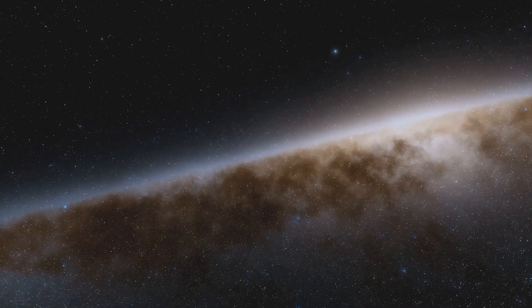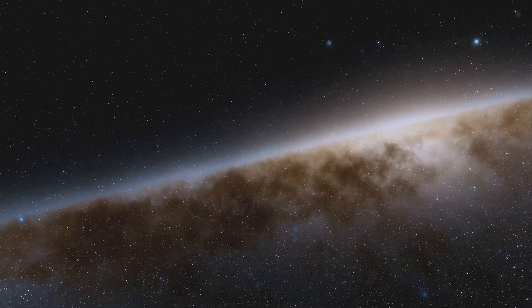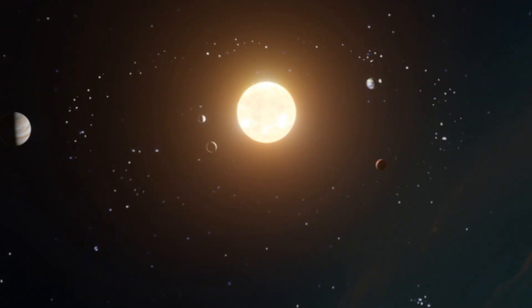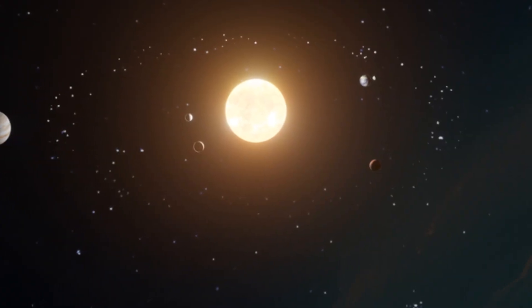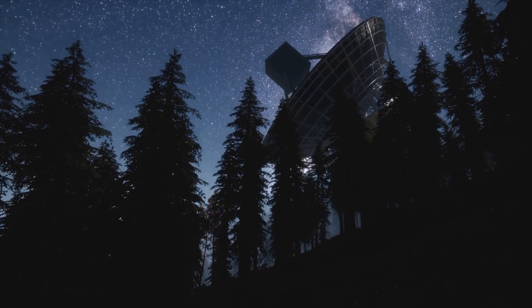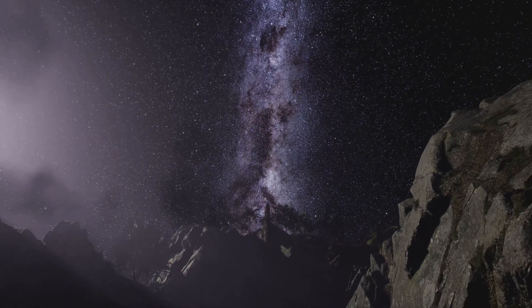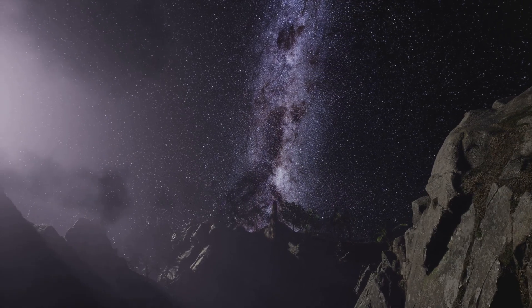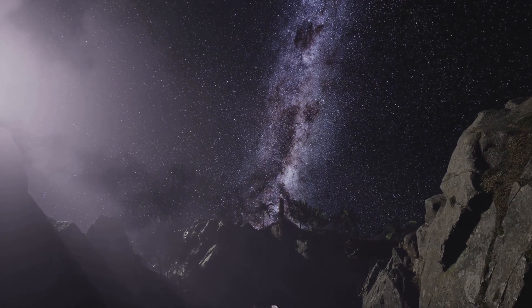In fact, astronomers estimate that there are likely billions of solar systems in the Milky Way alone. That's billions of stars, each potentially with its own family of planets. These discoveries have revolutionized our understanding of the universe. We now know that our solar system is just one of countless others scattered across the vast expanse of space.